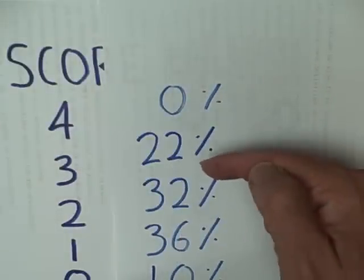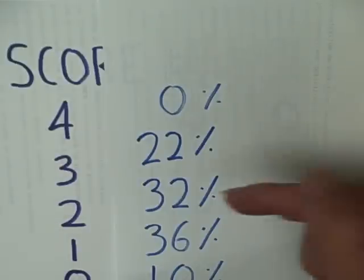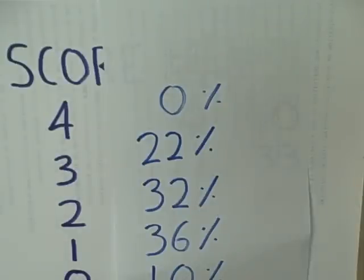0% scored a 4, 22% scored a 3, 32% scored a 2, 36% scored a 1, and only 10% of the students scored a 0.